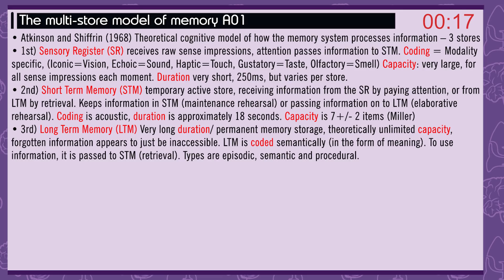Coding in the sensory register is modality specific: iconic is vision, echoic is sound, haptic is touch, gustatory is taste, and olfactory is smell. Capacity is very large — for all sense impressions each moment. Duration is very short, around 250 milliseconds, but varies per store.